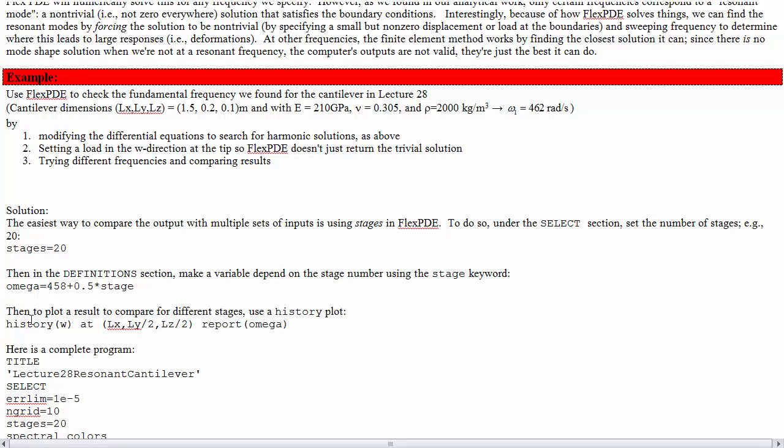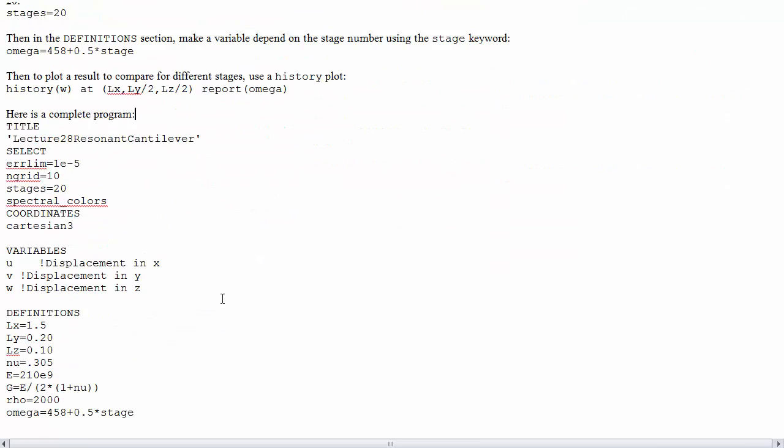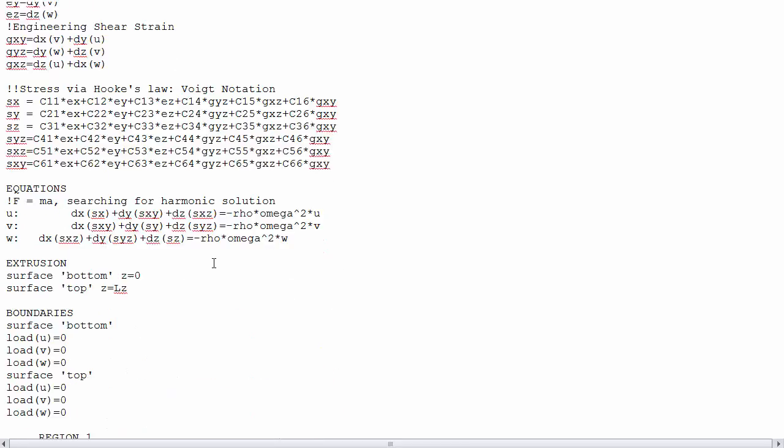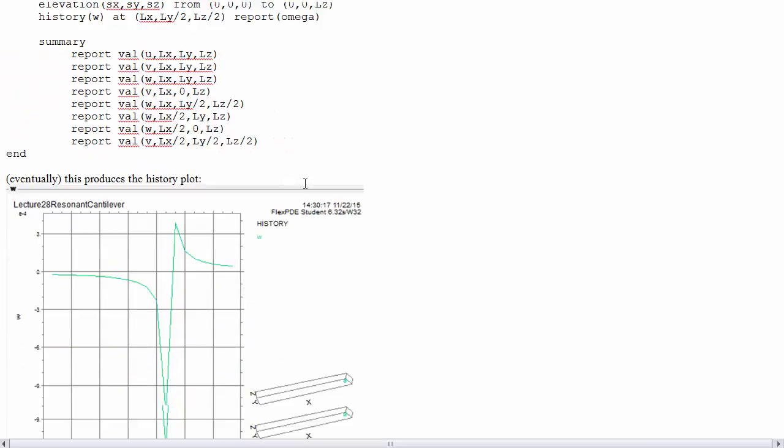Then we're going to plot a result to compare for different stages using a history plot. History of the W, so the displacement in the Z direction at some location on the beam. And then you can tell it to report the frequency. Here's the complete program of this. If you like and you have the notes, you can just copy this in and then try running it.